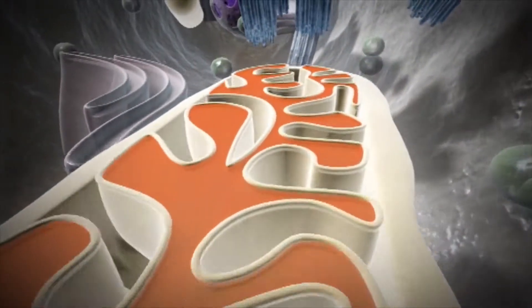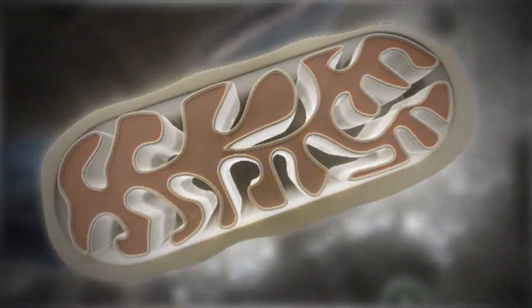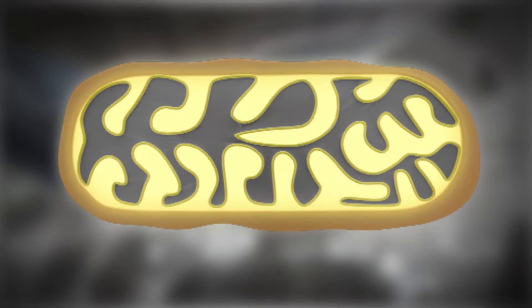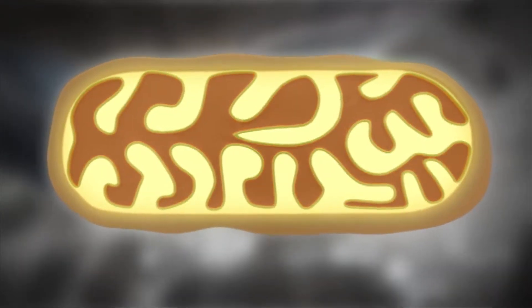Like a bag inside a bag, the mitochondrion has an outer and inner membrane, with an intermembrane space in between. The internal chamber is known as the matrix.